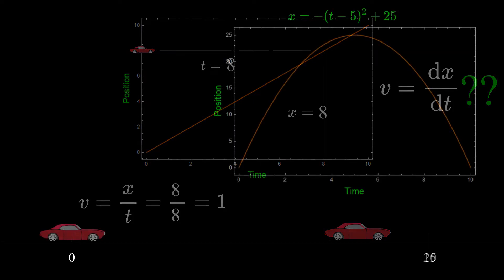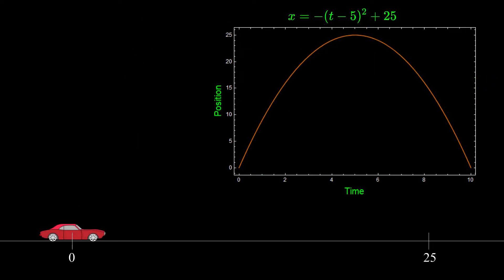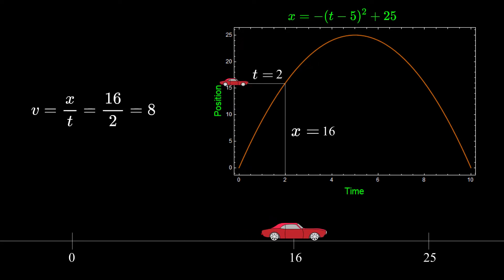But what if the position graph would look something like this? Well again, let's take some point on the graph and compare it with the time it took to get there and we have the velocity on that point, correct?